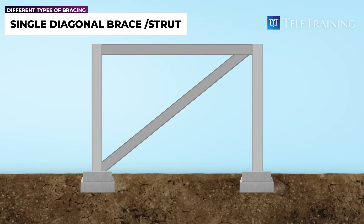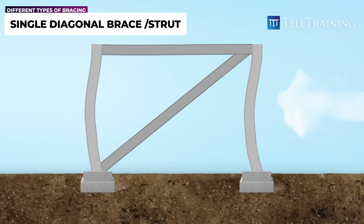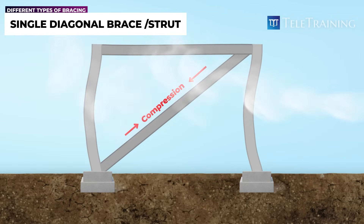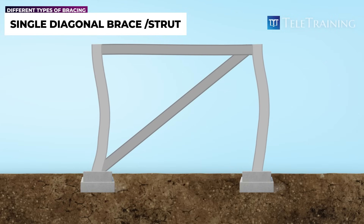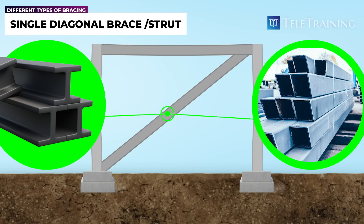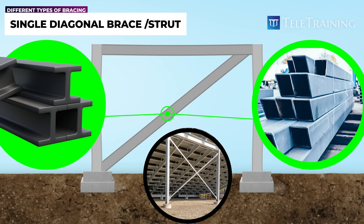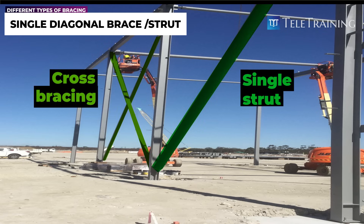If you look at this example, you will see that when lateral forces come from this direction, it will be put in tension. The single strut needs to have both good tension and compressive capacity. As a result, it is common to find larger hollow steel sections or universal columns being used as single-diagonal members. These are much heavier compared to cross-bracing members where much thinner steel can be used. Cross-bracing is usually cheaper to install than a single-diagonal strut, because the thinner members are lighter and cheaper to fabricate and install on-site.